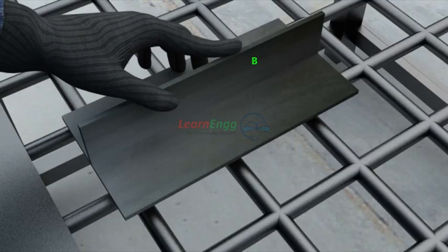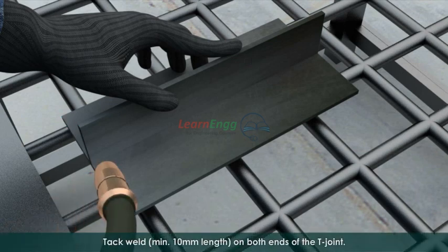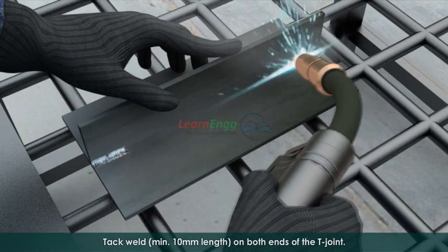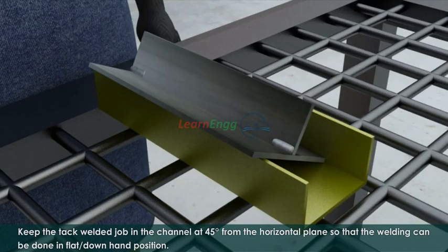Set the plate B on the plate A in the form of T as per drawing. Tack weld minimum 10mm length on both ends of the T joint. Keep the tack welded job in the channel at 45 degrees from the horizontal plane so that the welding can be done in flat or downhand position.